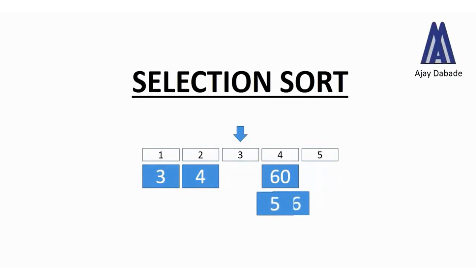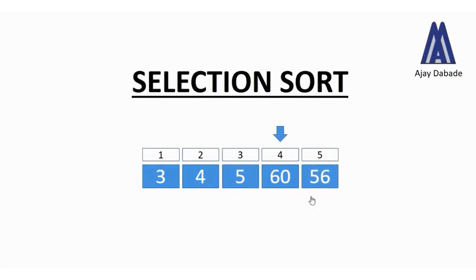Now the pointer moves to position 4. At position 4 we have number 60. From position 4 to position 5 the smallest number is 56, so we swap these numbers. After swapping, all the numbers are now in sorted form. This is selection sort, and now we will see the program for it.